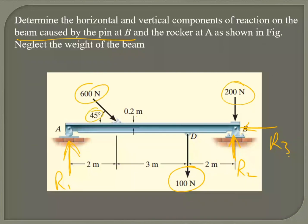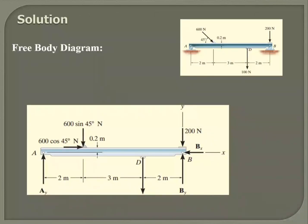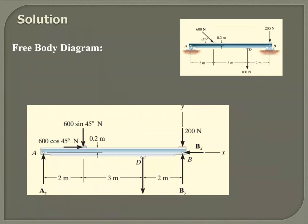So along with putting in the dimensions, I can draw my free body diagram and come up with something like this. You can clearly see that for A it's a rocker, and for pin B it's pivoted, and then I've got my active forces. So apply the equations of equilibrium and find me the values of AY, BY, and BX, please.